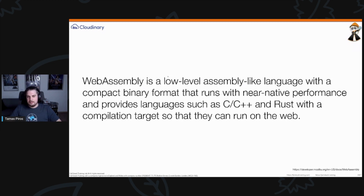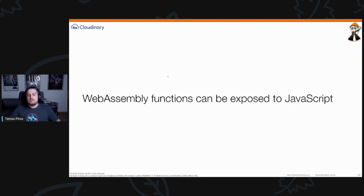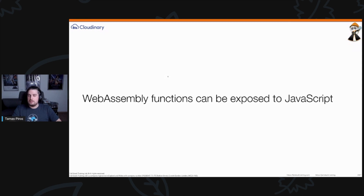My version is: run native apps on the web. Take your C, C++, or Rust application and just run it in your browser — that's essentially what we're talking about with WebAssembly. The great thing is that because it's part of the web ecosystem, WebAssembly can communicate with JavaScript. You can expose WebAssembly functions to JavaScript, invoke them, and WebAssembly will execute those functions.